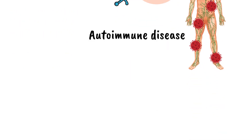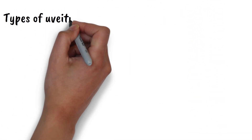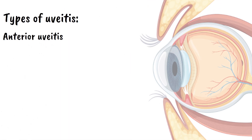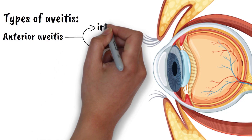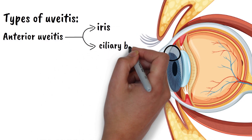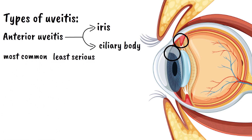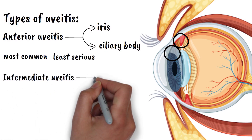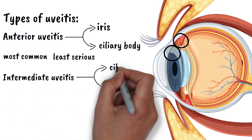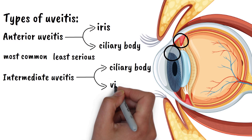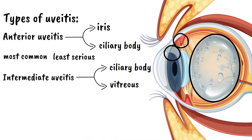There are several types of uveitis classified by which part of the uvea is affected. Anterior uveitis affects the front part of the eye, particularly the iris and ciliary body — the most common type and often the least serious, like inflammation in the front lobby of your house. Intermediate uveitis affects the middle part of the eye, primarily the ciliary body and the gel-like vitreous that fills your eye — like having inflammation in the main living areas, more serious and potentially more disruptive to daily function.